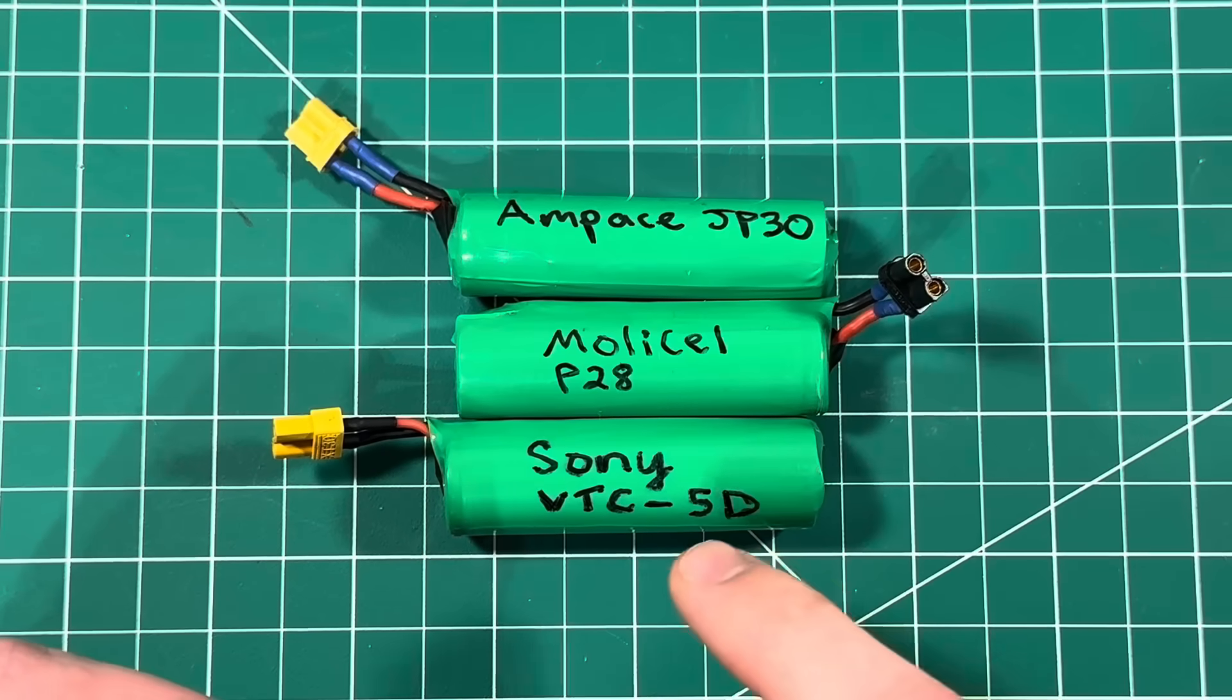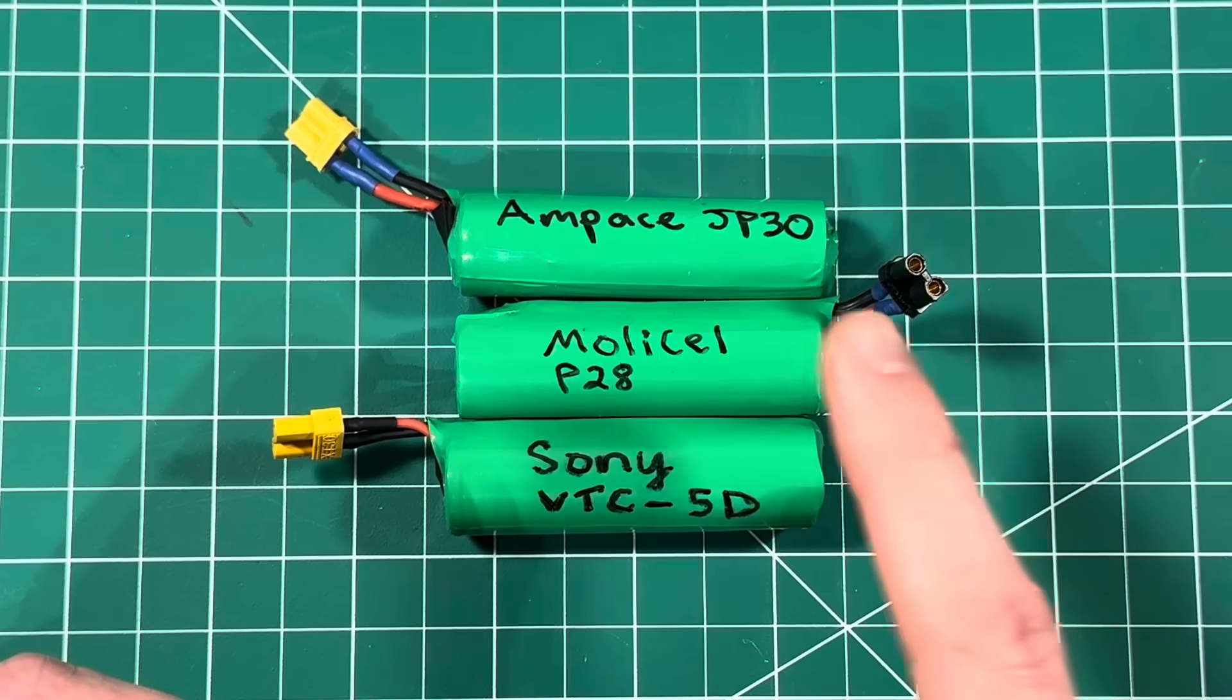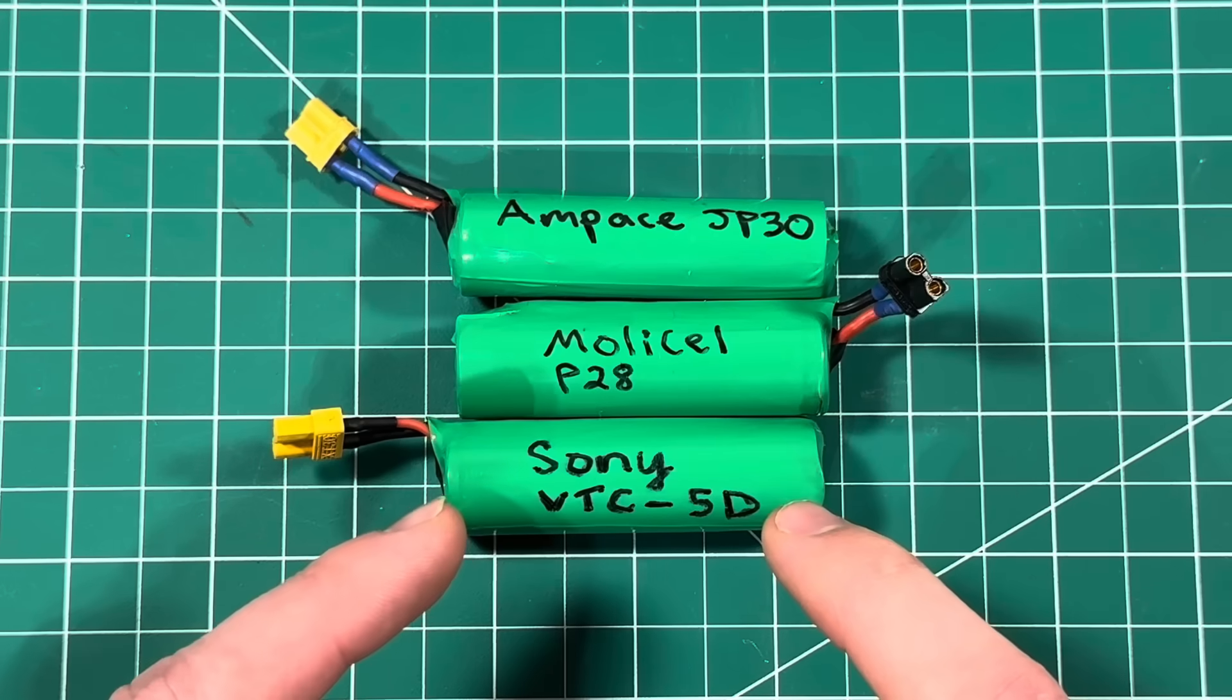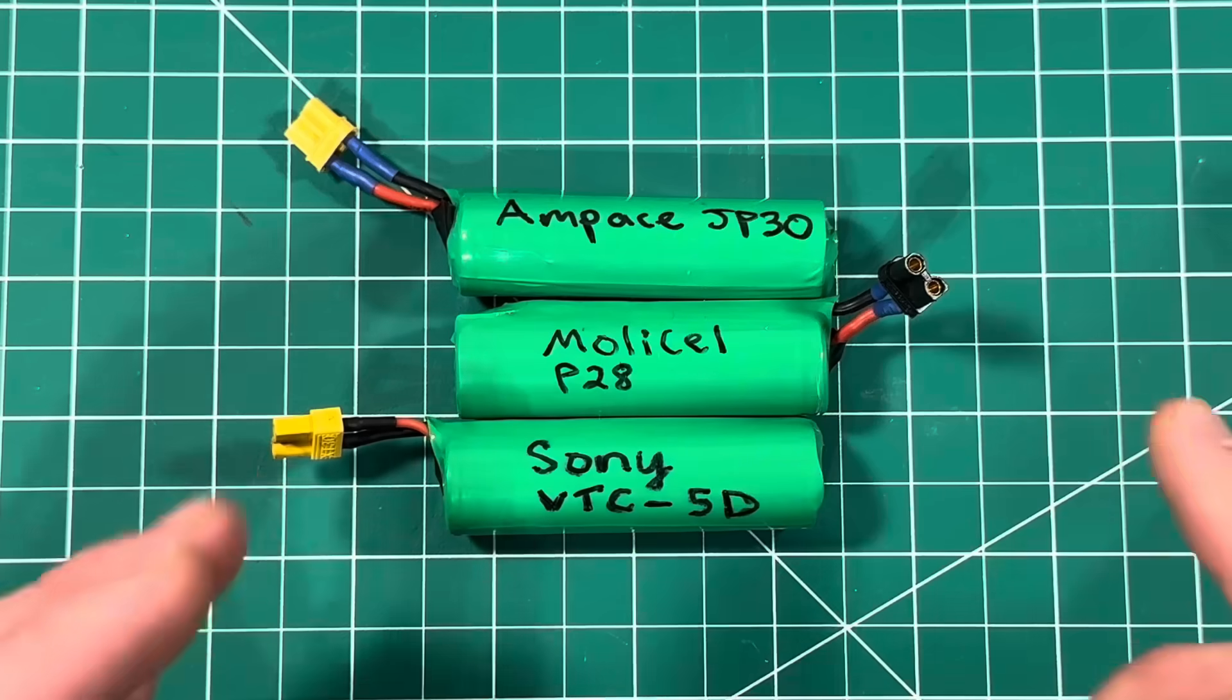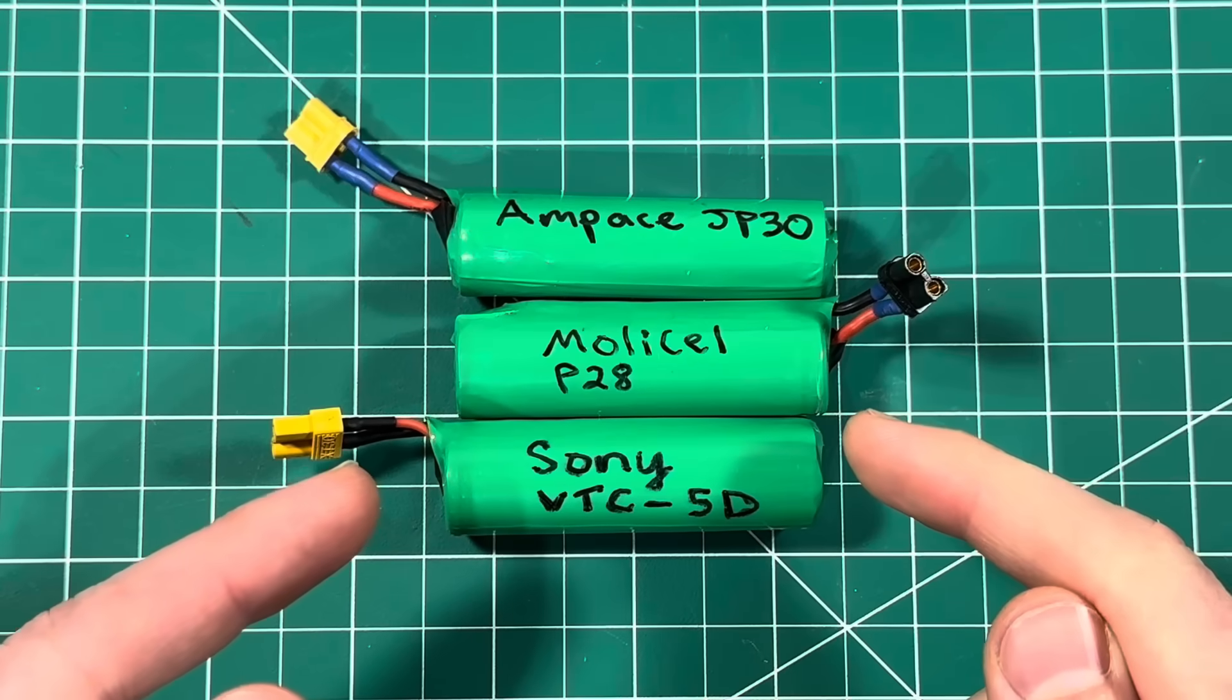Here are three different cells that I recommend. The Sony VTC5D comes in at 25 amps discharge rating, MOLLE cell at 35 amps, Ampace at 36 amps. The Sony flies pretty good, but the MOLLE cell and the Ampace are definitely a little bit better. I'll link a couple good sources on where you can get these cells.